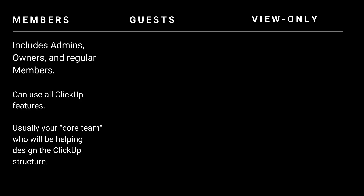In ClickUp, the number of seats refers to people with specific levels of access. Let's break down these three types of users: members, guests, and view-only guests. Members are anyone who can do just about everything that ClickUp can allow for. Members can be owners, admins, or just regular members — they're all part of this member category.